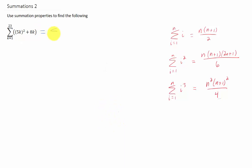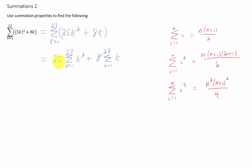The first thing we want to do is rewrite the sum. If we look at 5k squared, we could rewrite that as 25k squared. Then we can split this up into two pieces, pull out our constants, and we get this as our sum.